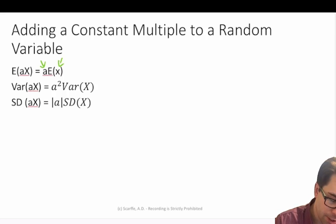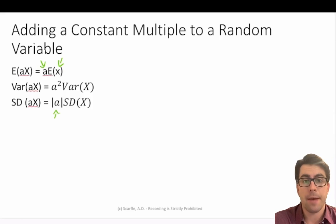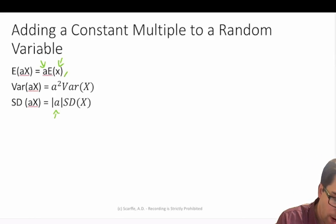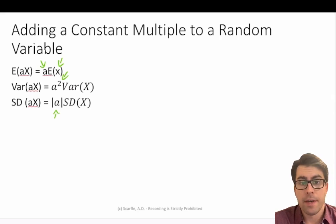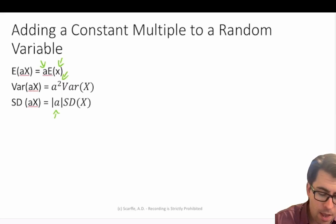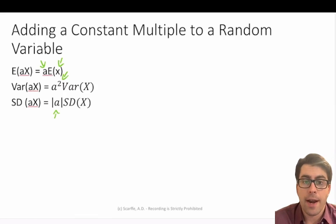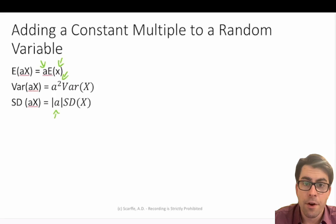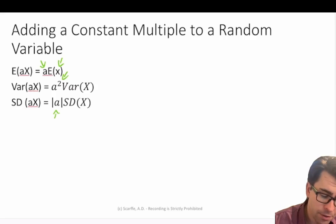I want to pay particular attention to the absolute value sign. The absolute value means that if there's a negative number inside the absolute value brackets, that number becomes positive. We could multiply by a constant multiple that is a negative number, say negative 2. When we deal with our variance, squaring negative 2 gives us positive 4. But when we deal with our standard deviation, we need to ensure that we do not have a negative standard deviation, because standard deviation is equal to the square root of the variance and we can't take the square root of a negative number. So this is why the absolute value brackets are around the constant multiple — whatever is inside there becomes positive automatically.